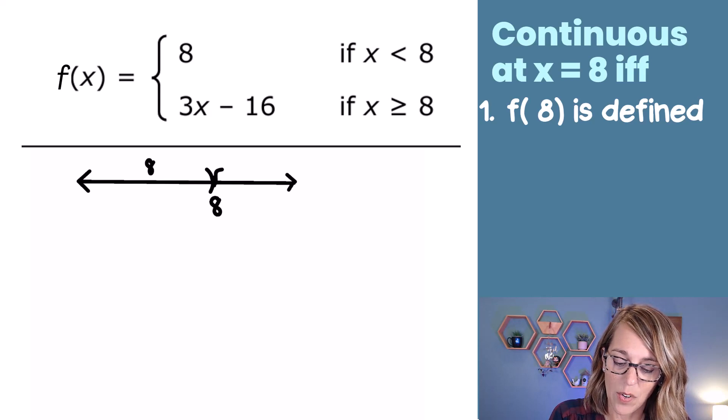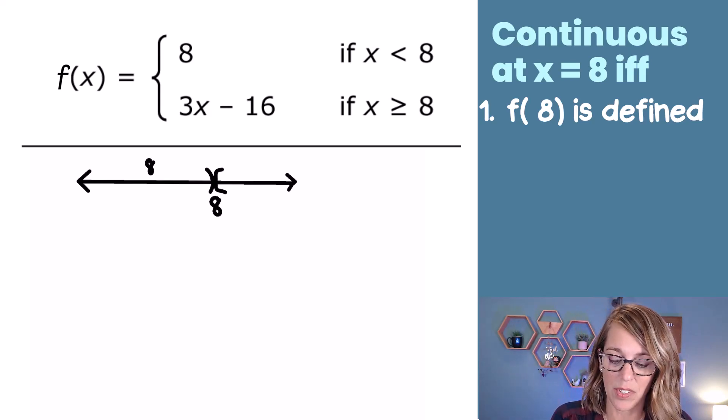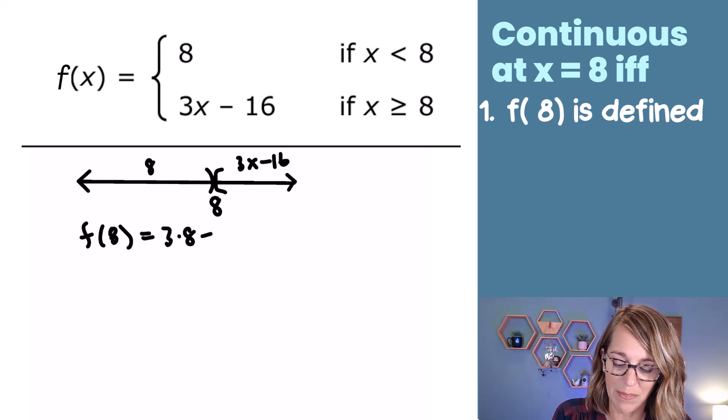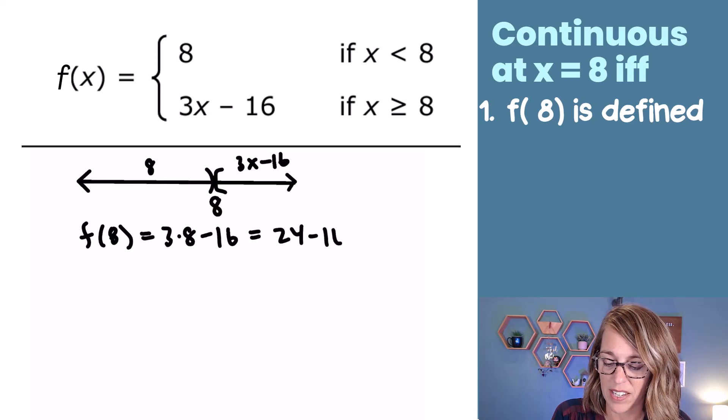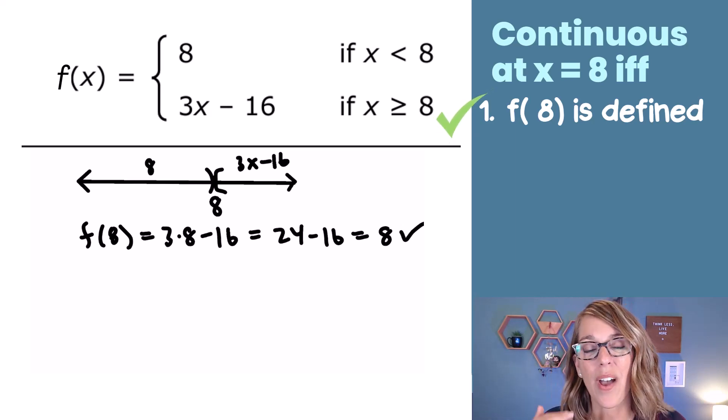But if I am at or greater than 8, I'll use a square bracket, I'm going to use the formula 3x minus 16. So that means that f(8) is going to use that second formula, 3 times 8 minus 16. That's going to be 24 minus 16, and I get a value, which means that it does exist. So I've got f(8) as being defined.